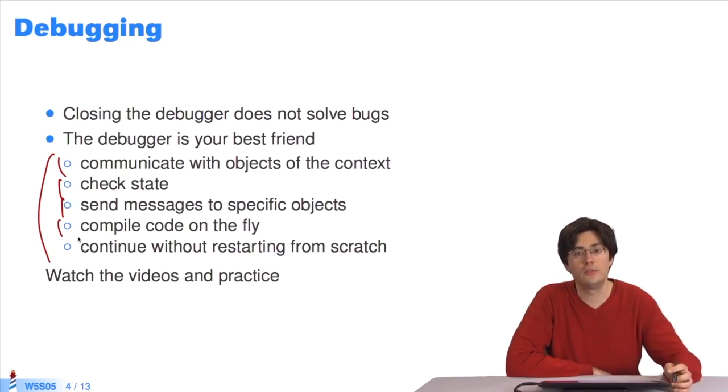We can, of course, modify the methods on the call stack, save, and continue with the new code without any problem. All without restarting execution from scratch. So if a method fails, we correct the method, we restart execution of the method, and the program continues.